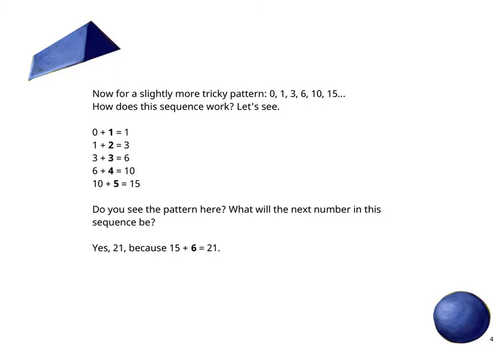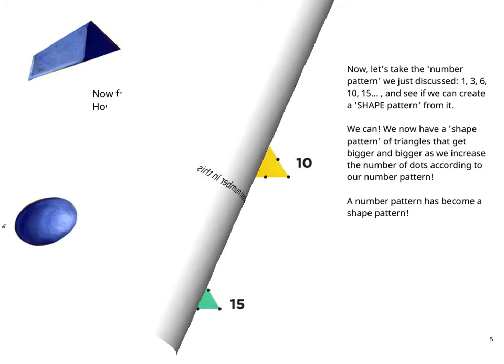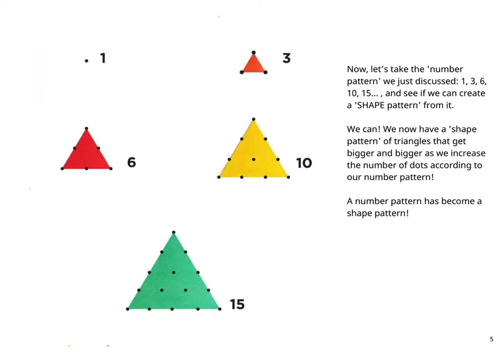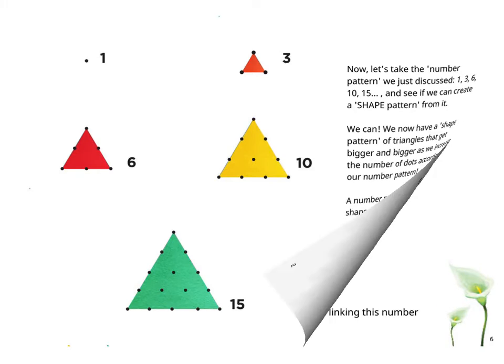Do you see the pattern here? So what will be the next number in this sequence be? Yes, it is 21, because 15 + 6 = 21. Now let's take the number pattern we just discussed - 1, 3, 6, 10, 15 - and see if we can create a shape pattern from it. Yes, we can! We now have a shape pattern of triangles that get bigger and bigger as we increase the number of dots according to our number pattern.